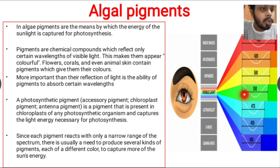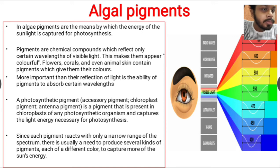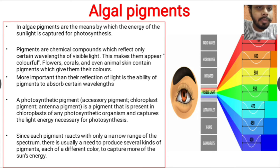Chlorophyll reflects light at the longer wavelength in the green region. That is why leaves or chlorophyll look green — because they reflect the green light after capturing the shorter blue wavelength of light, reflecting the longer green light. That's why leaves look green.